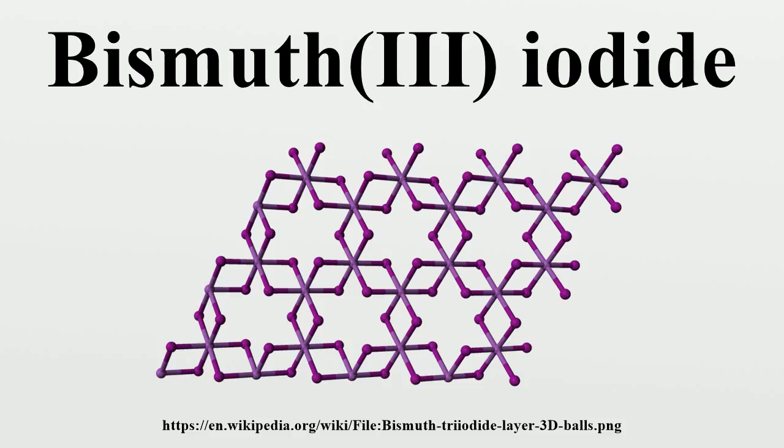Bismuth iodide adopts a distinctive crystal structure, with iodide centers occupying a hexagonally closest pack lattice, and bismuth centers occupying either none or two-thirds of the octahedral holes. Therefore it is said to occupy one-third of the total octahedral holes.